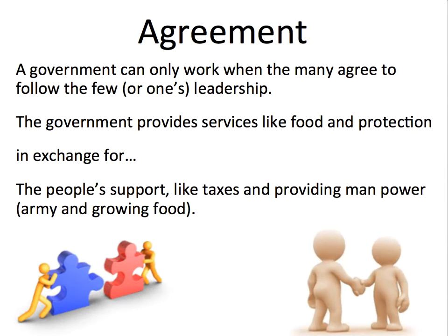Whenever you talk about government, there needs to be an agreement. The government has to be able to work by getting the many to agree to follow the rules of a few. The government provides services like food and protection in exchange for the people's support, which includes taxes and providing manpower for armies and to grow food. Please take a moment to highlight: government only works when the many agree to follow the few.